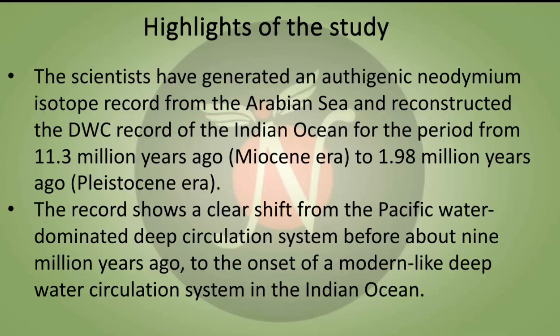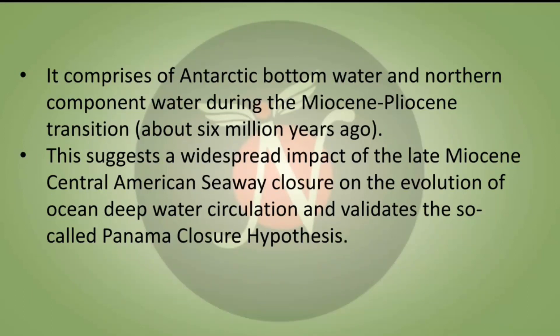Now we will see the highlights of the study. The scientists generated an authigenic neodymium isotope record from the Arabian Sea and reconstructed the deep water circulation record of the Indian Ocean for the period from 11.3 million years ago (Miocene era) to 1.98 million years ago (Pleistocene era). The record shows a clear shift from a Pacific water-dominated deep circulation system before about 9 million years ago to the onset of a modern-like deep water circulation system in the Indian Ocean, comprising Antarctic bottom water and northern component water during the Miocene-Pliocene transition about 6 million years ago.